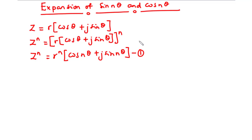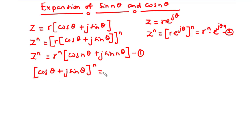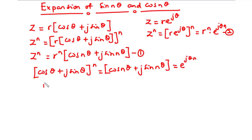Similarly, a complex number can be represented in the exponential form as z = r·e^(jθ), so z^n = (r·e^(jθ))^n = r^n · e^(jnθ). Let's call this equation two. It is therefore reasonable to conclude that (cos θ + j sin θ)^n = cos(nθ) + j sin(nθ), and that is also equal to e^(jnθ).